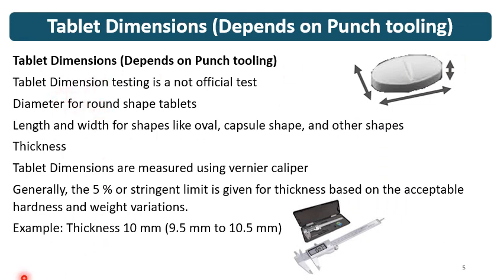Once appearance checking is done, we move to dimensions. Dimensions include diameter for round tablets, and length and width for oval-shaped or other-shaped tablets. Thickness is a universal test for tablet formulation. These tests are not official — they are product specific. Tablet dimensions are measured using a vernier caliper and given in mm. Generally a 5% or more stringent limit is given for thickness based on acceptable hardness and weight variations. For example, if you have a thickness of 10 mm and give a 5% range, that becomes 9.5 mm to 10.5 mm.